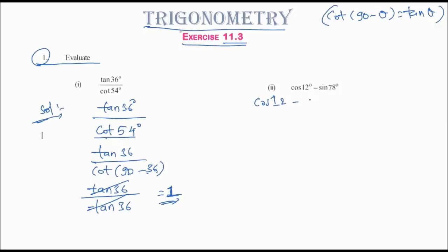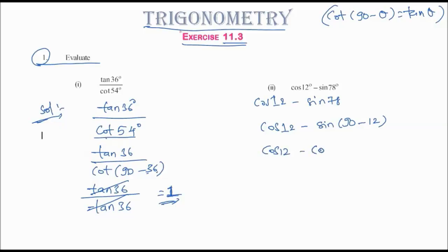Second question: cos 12° - sin 78°. We write sin 78° as sin(90° - 12°). Using the formula sin(90° - θ) = cos θ, this becomes cos 12° - cos 12°, which equals 0. That is the answer.